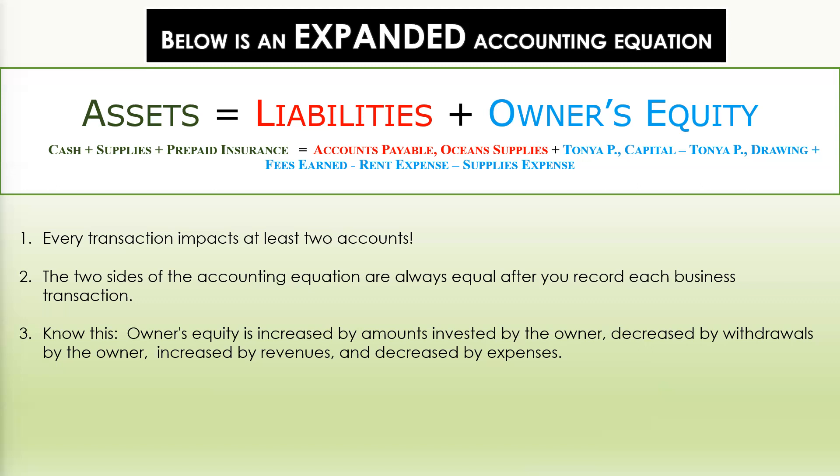The two sides of the accounting equation are always equal after you record each business transaction. You will always remain in balance — always. Also know this: owner's equity is increased by amounts invested by the owner, decreased by withdrawals by the owner (we call that drawing), increased by revenues, and decreased by expenses, as you can see in the expanded accounting equation.